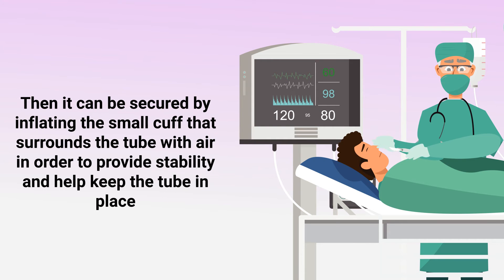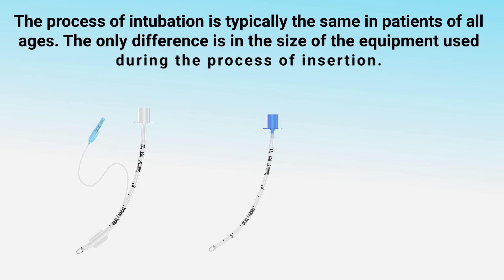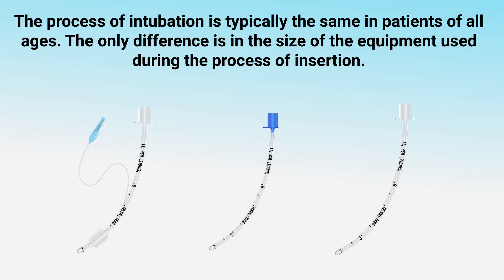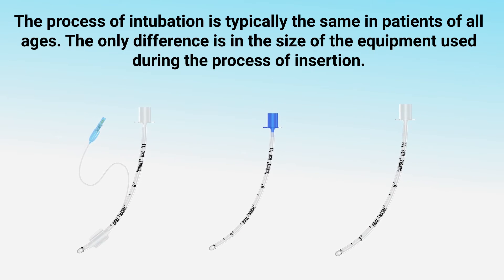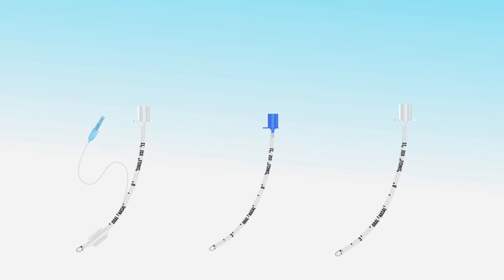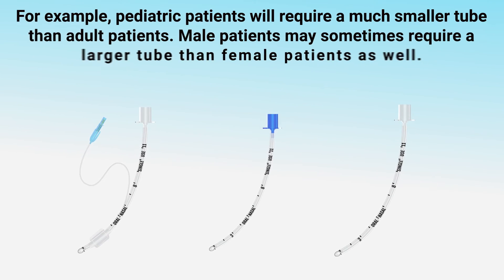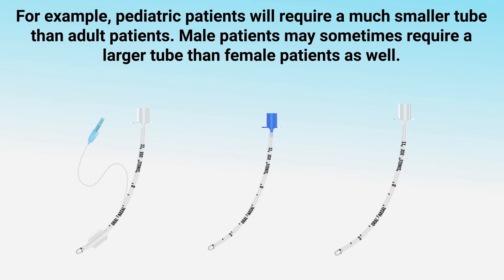The tube is then secured by inflating the small cuff that surrounds it with air, providing stability and helping keep the tube in place. The process of intubation is typically the same in patients of all ages — the only difference is in the size of the equipment used. For example, pediatric patients will require a much smaller tube than adult patients.